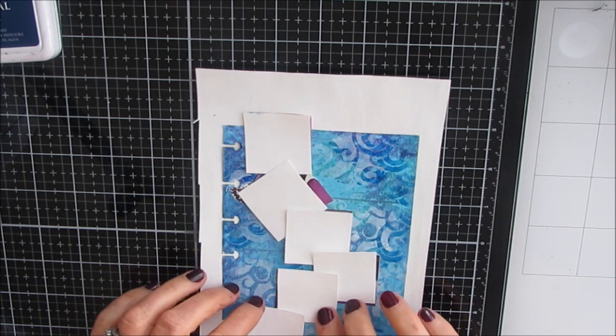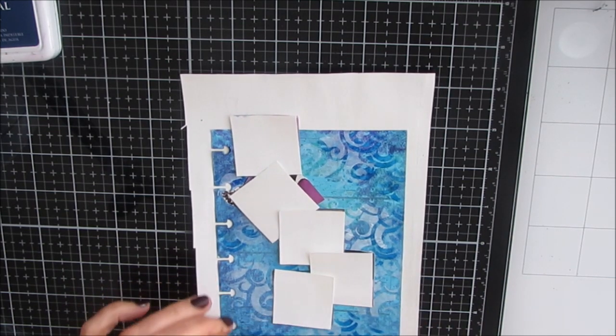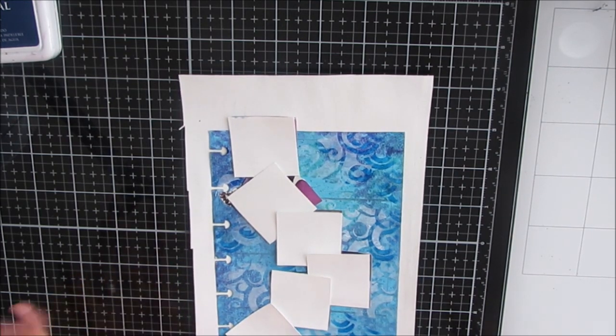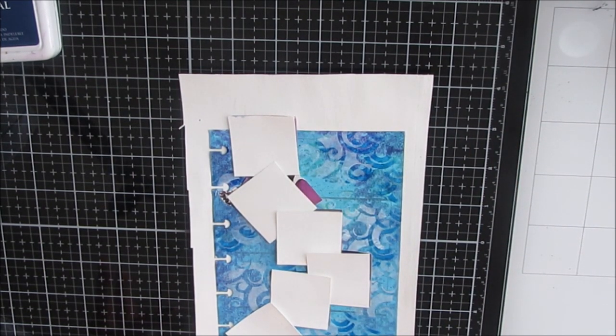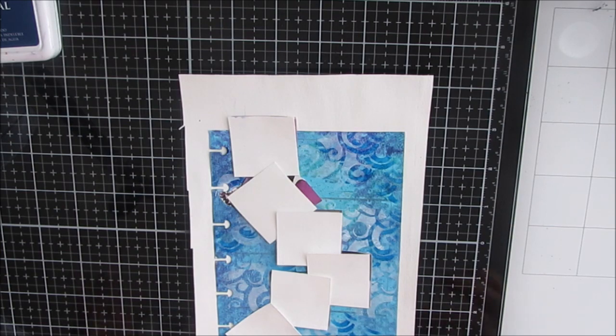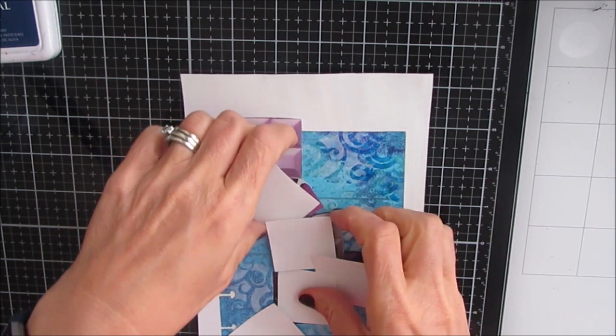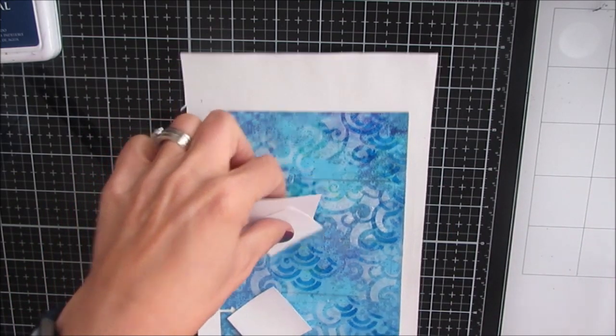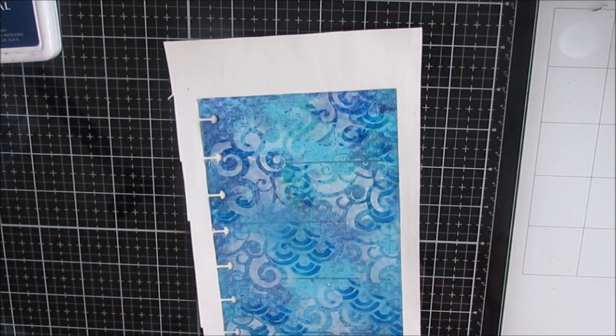Now instead of using negative painting, I could have cut these squares out of some of my gel prints and glued those on. I'm looking at the background and I know I'm going to use the negative painting technique, so the background is going to disappear, but I want to add a lot of interest to the squares that are left visible.